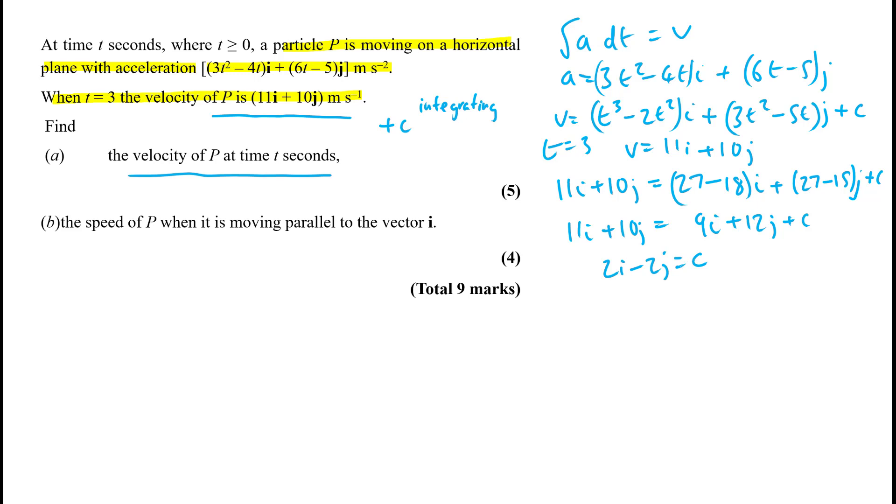So that's 2i minus 2j equals c, I believe. And if we do that, what do we get here? If we get to this, that gives us a method mark and the accuracy mark here. I believe if you do that you get a method mark up to here. And then we just need to finish this off. The velocity of p at time t seconds. So we just need to write that in terms of i and j. So we have our c, so we still keep the same equation. T cubed minus 2t squared, we've got plus 2, put the i on the outside. Plus 3t squared minus 5t, got minus 2j. So that's minus 2j.